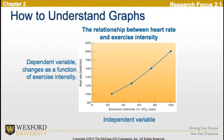Here's an example of a graph that shows the relationship between heart rate and exercise intensity. The dependent variable is heart rate on the y-axis, and it changes as a function of the exercise intensity. The independent variable is the exercise intensity, which is demonstrated on the x-axis running horizontally on this graph. From this graph, we can see that as exercise intensity increases, heart rate increases, which is the dependent variable.